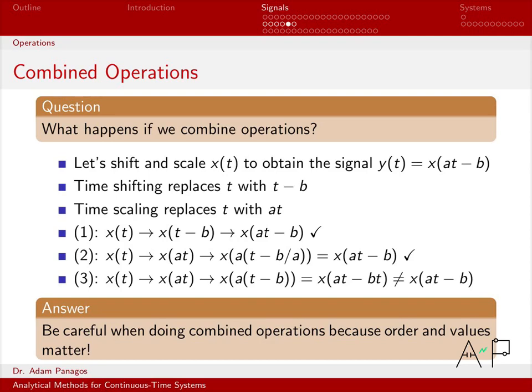So x(t): replace t with at, and I end up right there just like we wanted. What happens now if I do the time shift? I replace t with t - b, which seems like the obvious choice. Well, after you do that, after you multiply this out, I get at - ab.